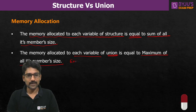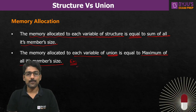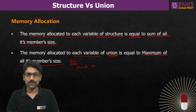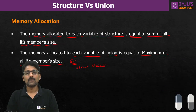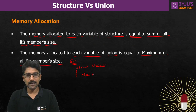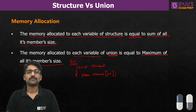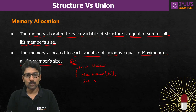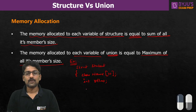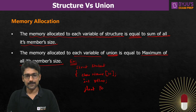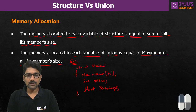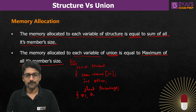Let's look at an example quickly. Suppose I am creating a structure called 'student' with members: char name[10], int roll_number, and float percentage. I am creating two variables v1 and v2 for this structure.